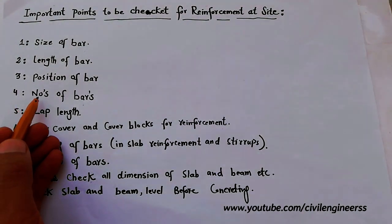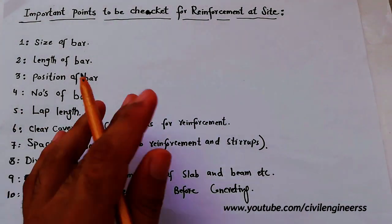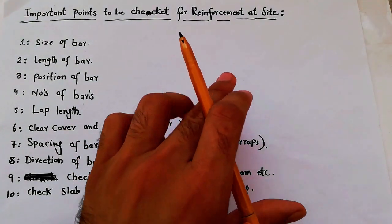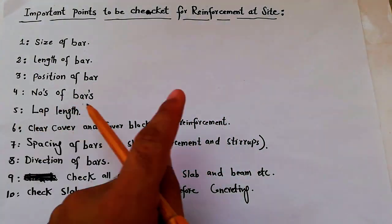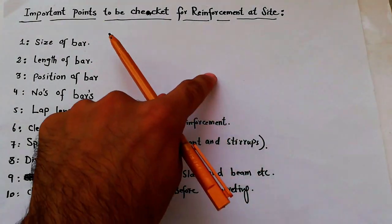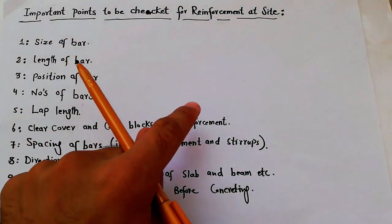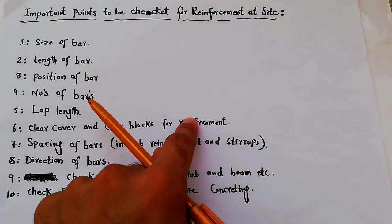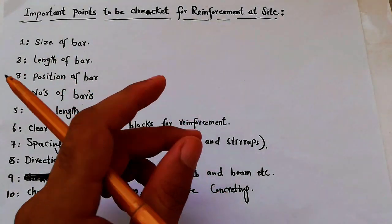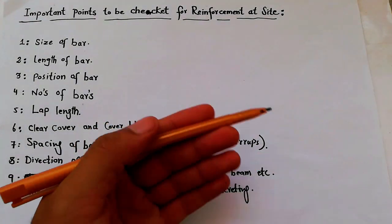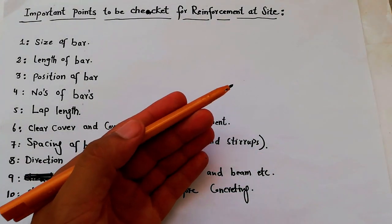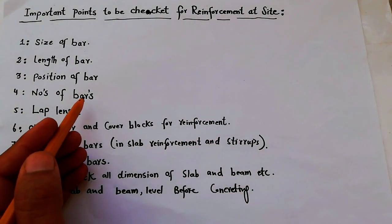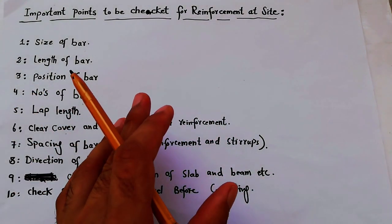Fourth, the number of bars should be checked. When you place the steel on slab, you have to check the number of bars for main bars and also distribution bars — is the number of bars correct or not as per drawing. In distribution bars you have to count all the number of steel bars in the slab, and also for main bars you have to check the number of bars. This point is very important for site engineers.